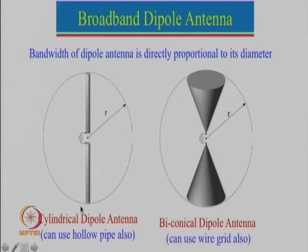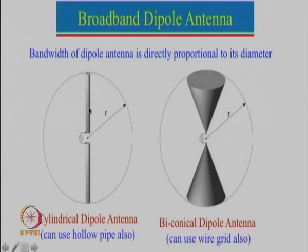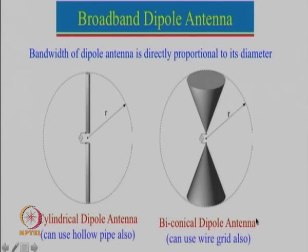Instead of using a solid cylinder we can also use a hollow pipe — using a thick solid cylinder will have a very large weight, whereas a hollow pipe of the same diameter will have reduced weight. In general, if you take a hollow pipe or a solid cylinder there is hardly any change in performance. If we really want to increase the bandwidth further, one option is to use a conical shape dipole — since there are two cones it is known as a biconical dipole antenna, which can be designed for extremely large bandwidth.